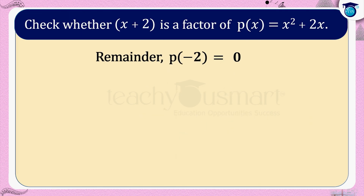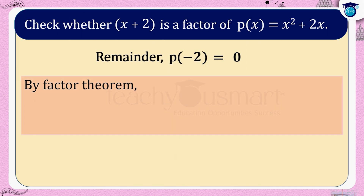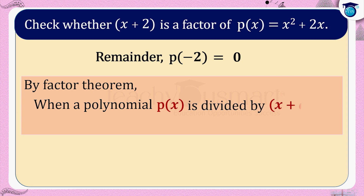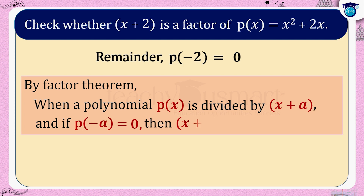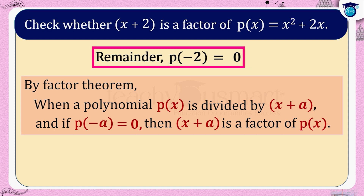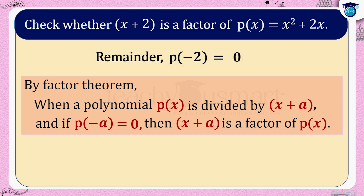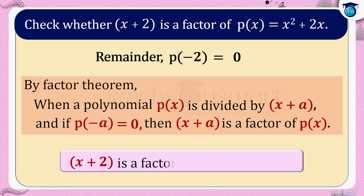By the factor theorem, when a polynomial p of x is divided by x plus a and if p of minus a equals 0, then x plus a is a factor of p of x. Here we got the remainder p of minus 2 as 0. Therefore, x plus 2 is a factor of p of x equals x squared plus 2x.